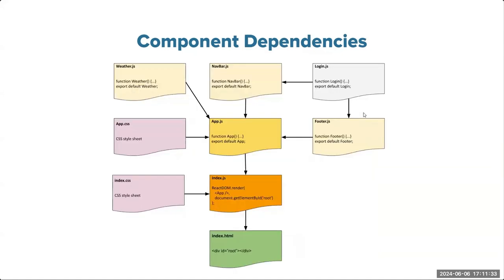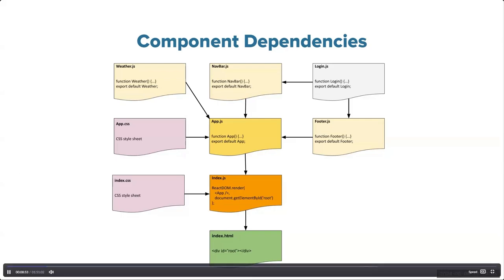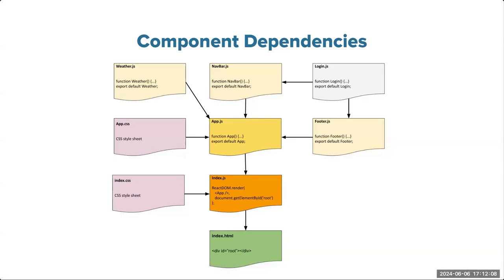When you build an application in React, the idea is to break down your components as small as possible — even a single search bar, a single image, or the logo of your website can be its own component. All these components are linked to parent components, forming a dependency chain. That dependency is pretty sensitive: if something in your tree has an error and crashes, usually the entire app crashes.